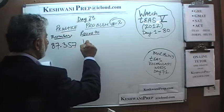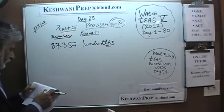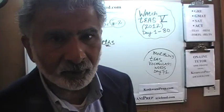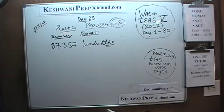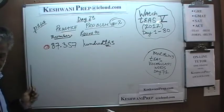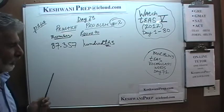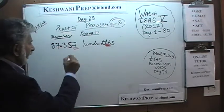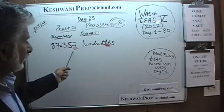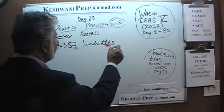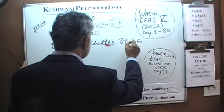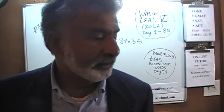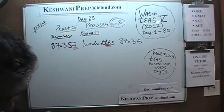Next: 87.357 rounded to the nearest hundredths. Where is the hundredths digit? There is the decimal, that is the tenth digit, and this is the hundredth digit. We go one digit to the right and ask ourselves, is it five or more? Yes, it is. So this five will become six. 87.357 when rounded to the nearest hundredths becomes 87.36.